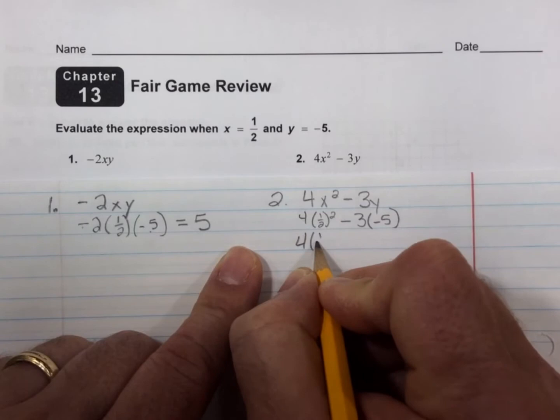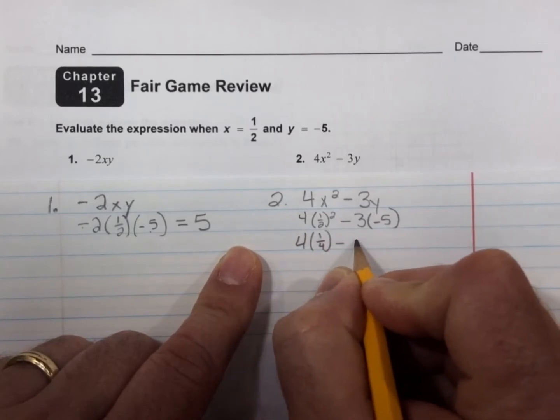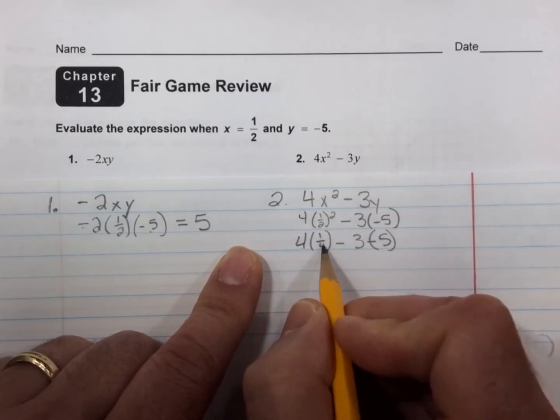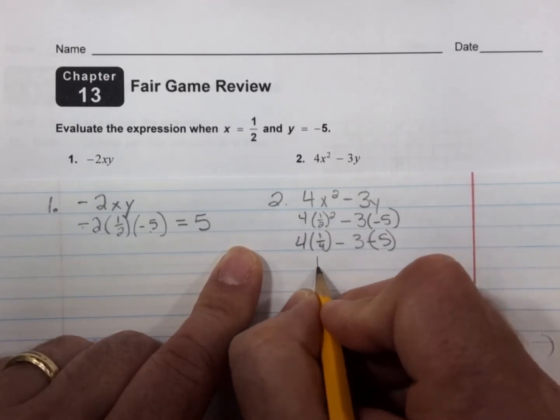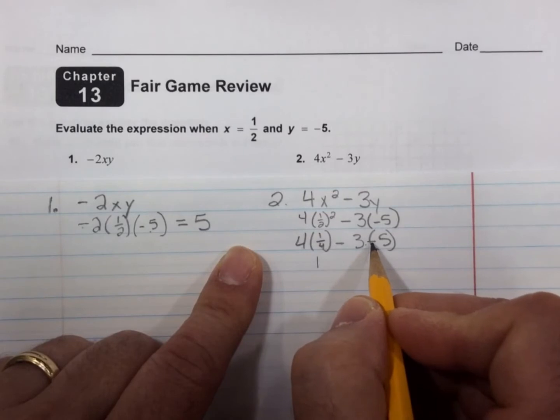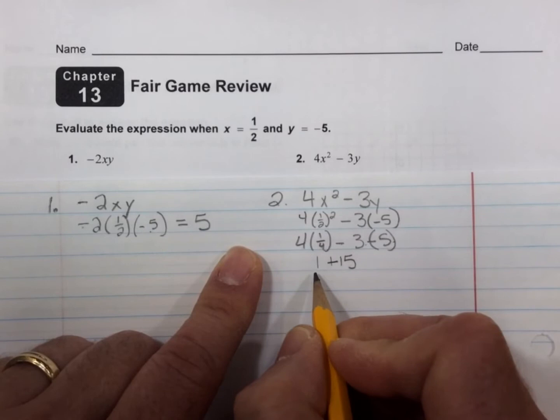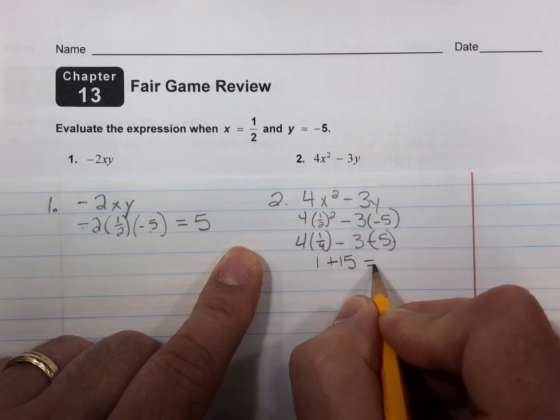So now we have 4 times 1/4 minus 3 times -5. 4 times 1/4 is just 1 minus 3 times -5 would be positive 15. 1 plus 15 is 16.